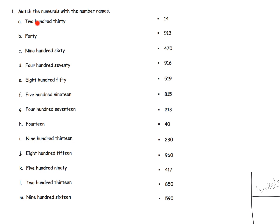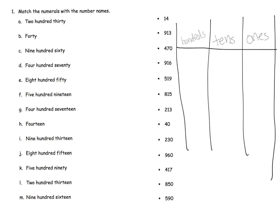Our task here is to look at these numbers written in word form and match them with the number form over here. What I would do is probably start by allowing students the opportunity or the choice to use a place value chart like right here, and then read the word form and place it into the place value chart — that's going to help us recognize the number form. For example, this 230.